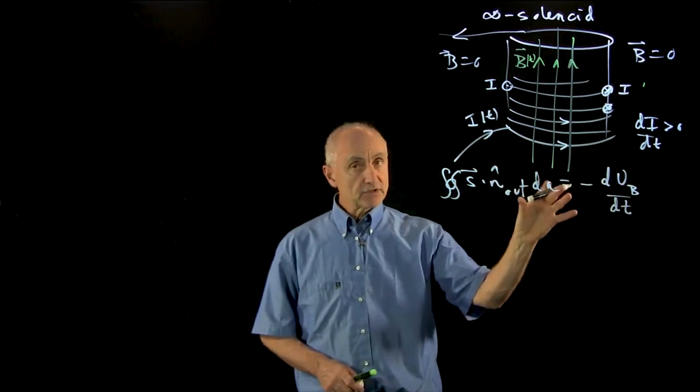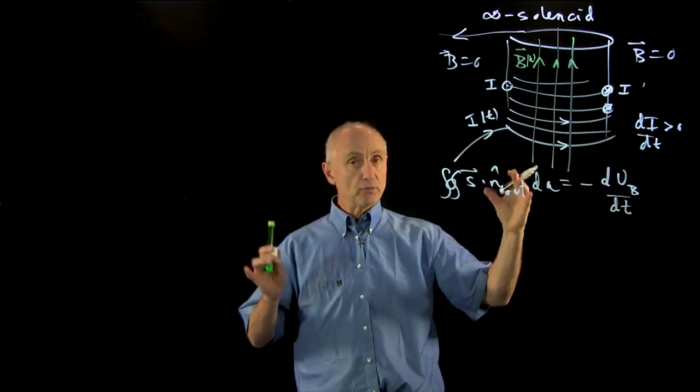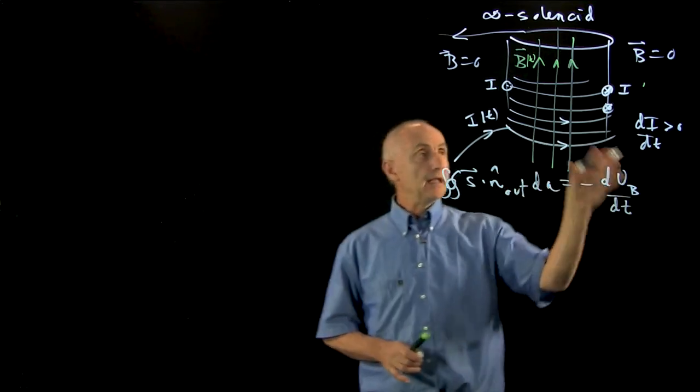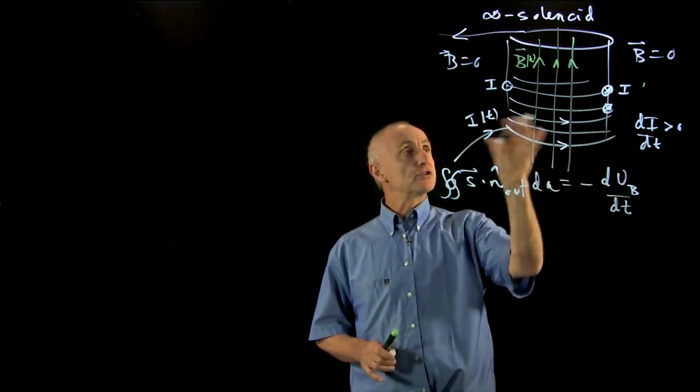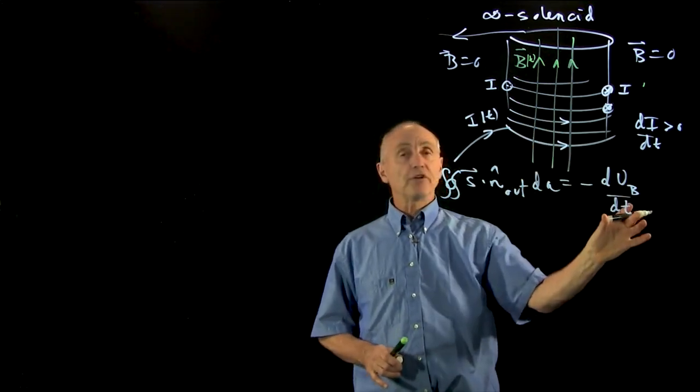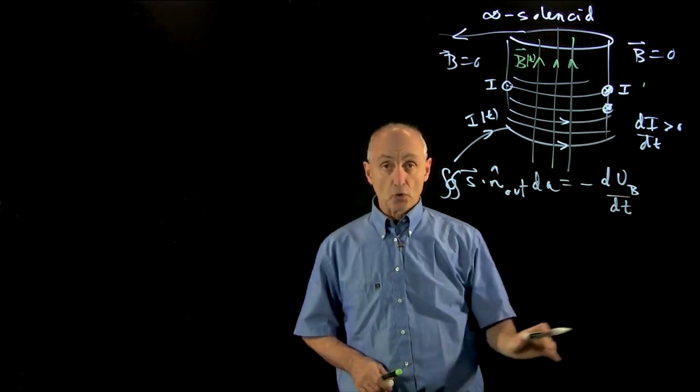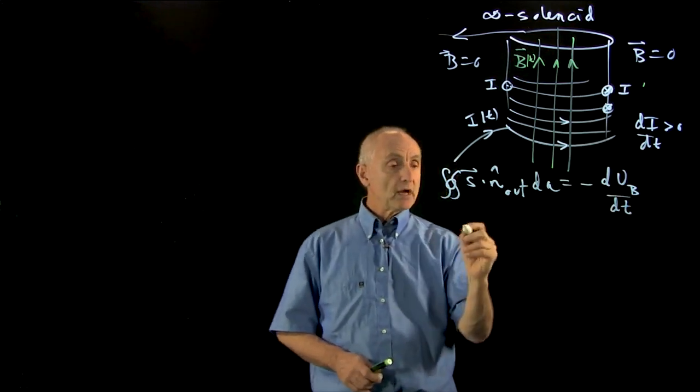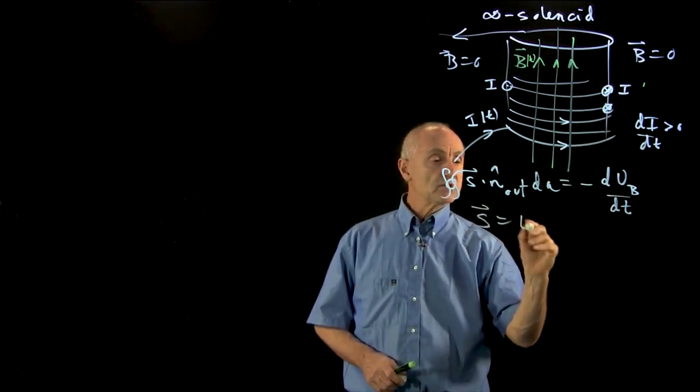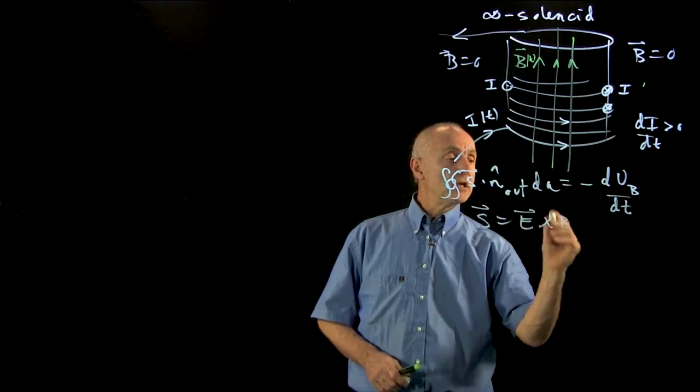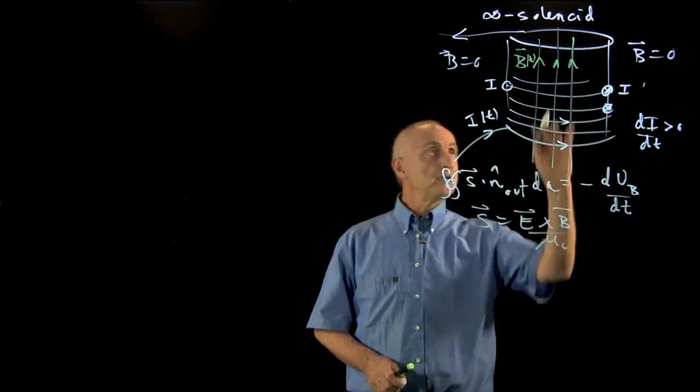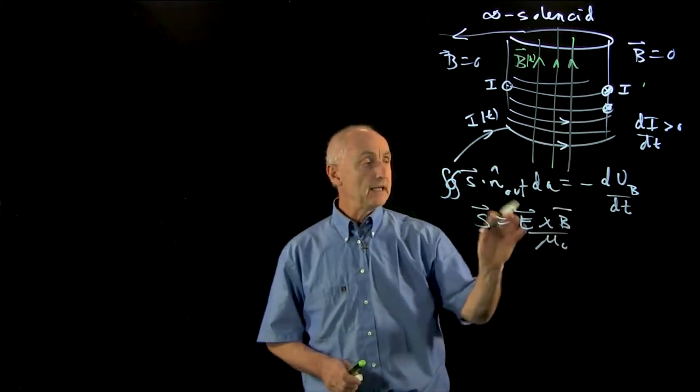The negative sign comes in because power flows into a region, negative. If the current is increasing, the magnetic field will be increasing in time, and so will the energy stored in the magnetic field be increasing in time. Our Poynting vector is E cross B over mu_0, and so we need to calculate B and E.